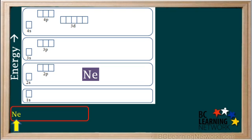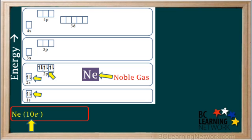We'll start by looking at the configuration of neon, element number 10. Neon is a noble gas with 10 electrons. The electrons enter the lowest energy orbitals first, as shown here. This gives us the configuration of 1s2, 2s2, 2p6.